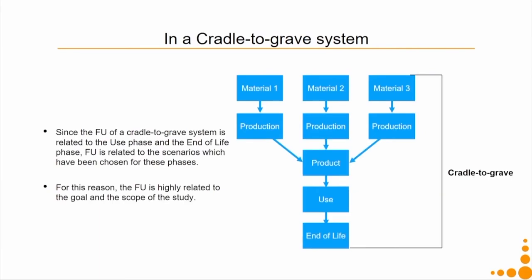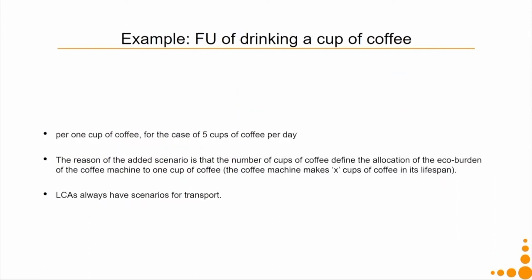Since the functional unit of a cradle-to-grave system is related to the use phase, my functional unit is connected to the use phase — because that is what the functionality of that particular system is — and it is also connected to the end-of-life phase. Functional unit is related to the scenarios chosen for these phases. We can choose different scenarios, and in each scenario we will have a different functional unit. For this reason, the functional unit is highly related to the goal and scope of the study.